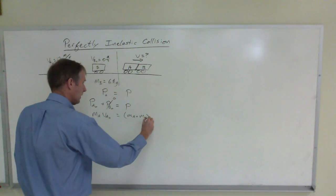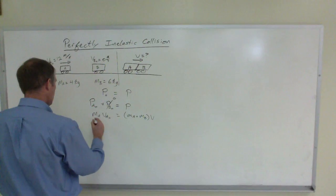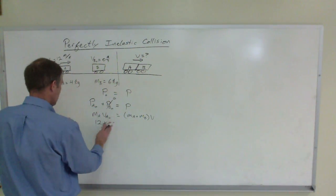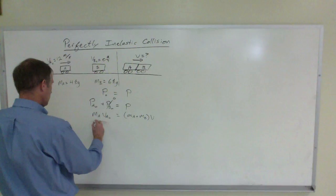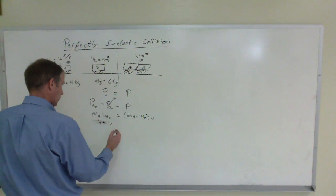Like I said, times that velocity afterwards that I'm looking for. So A is 12 kilograms times—sorry it isn't, my bad—4 kilograms times 12 meters per second, which is 48.